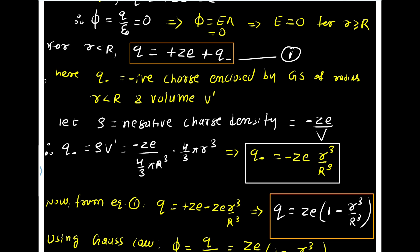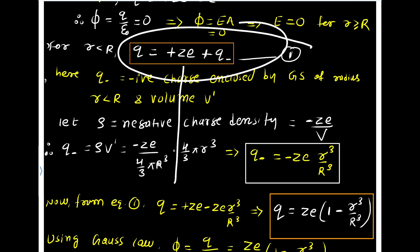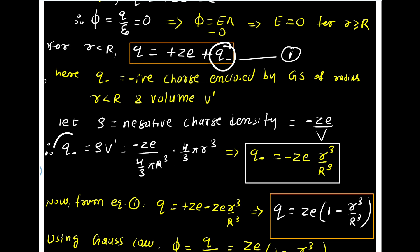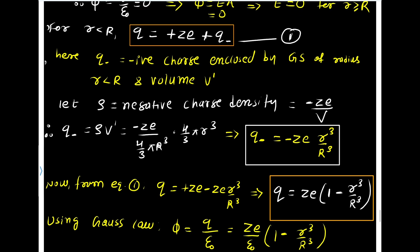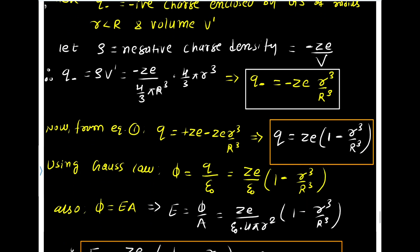The total charge enclosed in the Gaussian surface includes the positive charge as well. So the total charge is plus Ze plus this charge, which gives Ze minus Ze r cubed by R cubed. Taking Ze as common, we are left with Ze times (1 minus r cubed by R cubed).